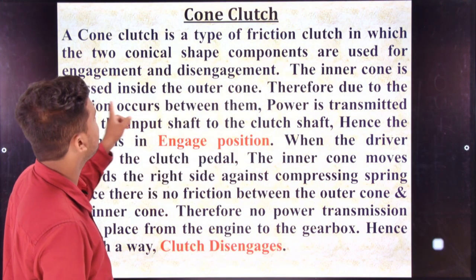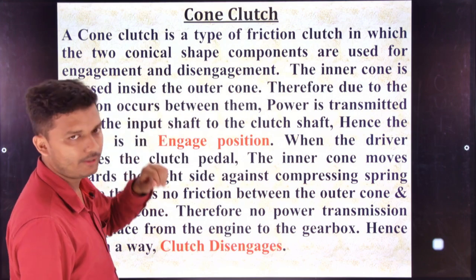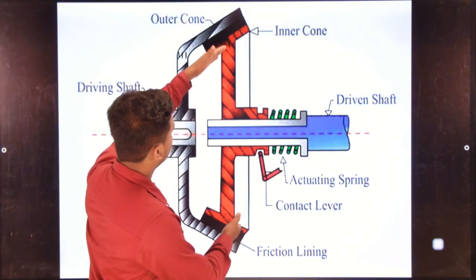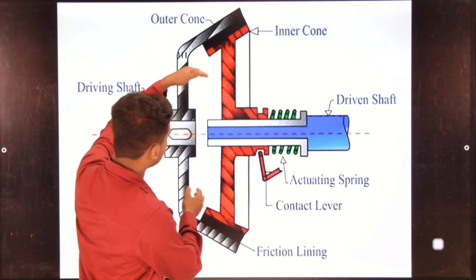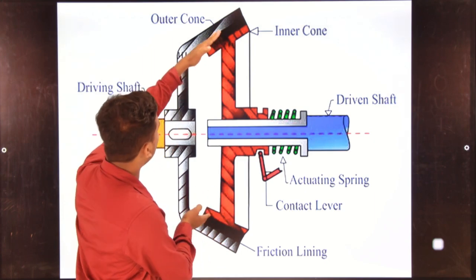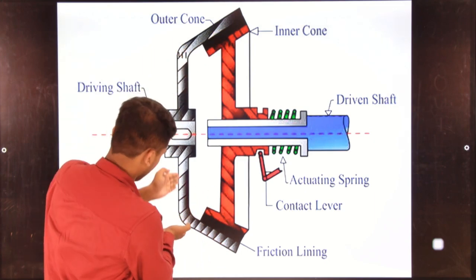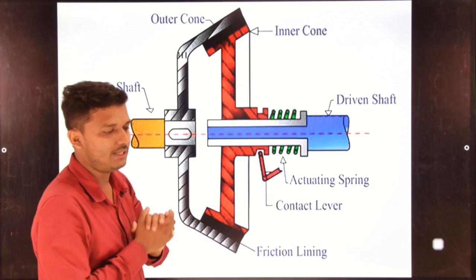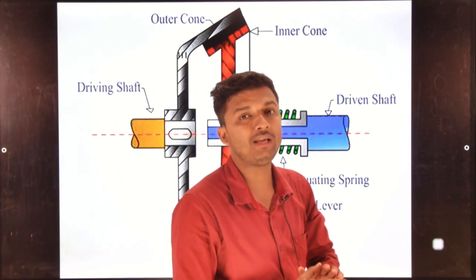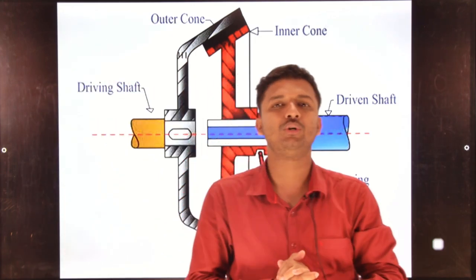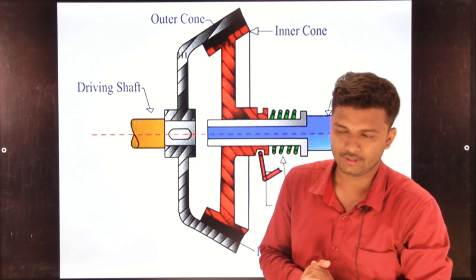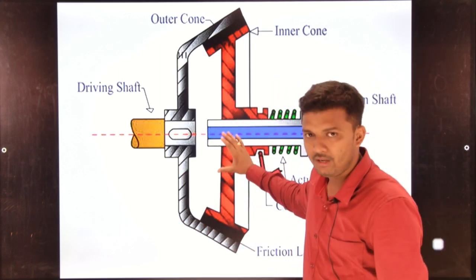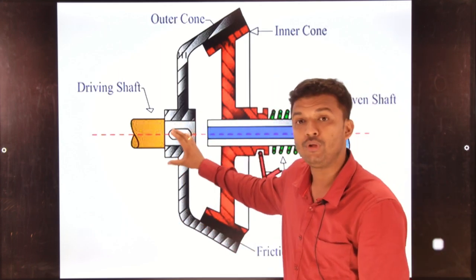The inner cone is pressed inside the outer cone. The outer cone is otherwise known as the female part of the cone clutch system. The inner part is male, and the outer part is the female.